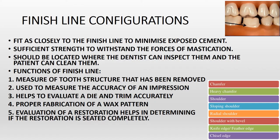The finish line type depends on the type of restoration being done. The finish line should fit as closely as possible to minimize exposed cementum, should have sufficient strength to withstand masticatory forces, and should be located where the dentist can inspect and the patient can clean it. Functions of the finish line: it measures how much tooth structure has been removed, measures accuracy of an impression, helps evaluate the die accurately, and assists in proper fabrication and evaluation of the restoration.